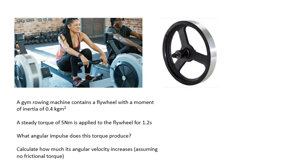Let's have a go at a couple of examples. There's a gym rowing machine with a flywheel that has a certain moment of inertia. A steady torque of 5 newton metres is applied to the flywheel for 1.2 seconds. What angular impulse does that torque produce, and by how much does the angular velocity increase, assuming no frictional torque? The angular impulse equals torque times delta t: 5 times 1.2 equals 6 newton metre seconds. Then delta omega equals the angular impulse divided by the moment of inertia — giving 15 radians per second as the change in omega.